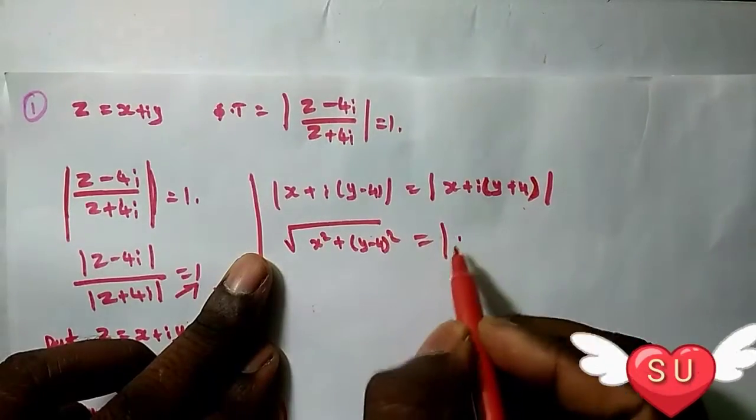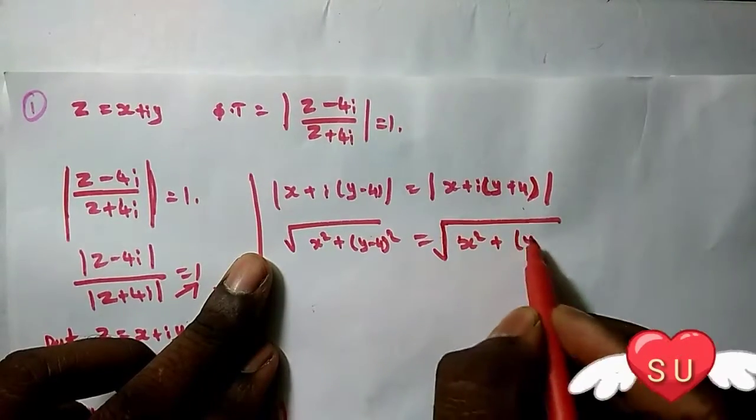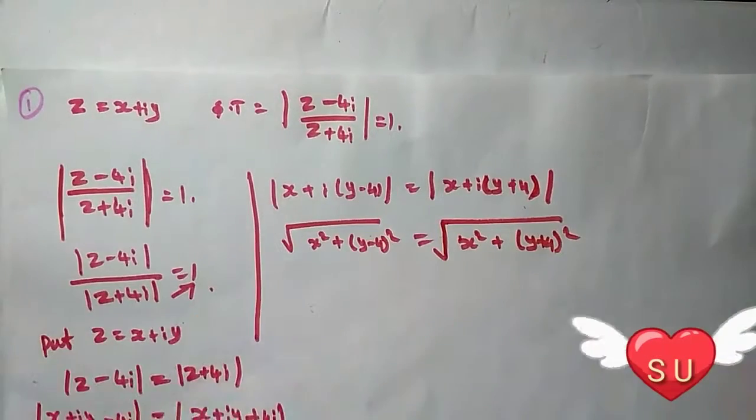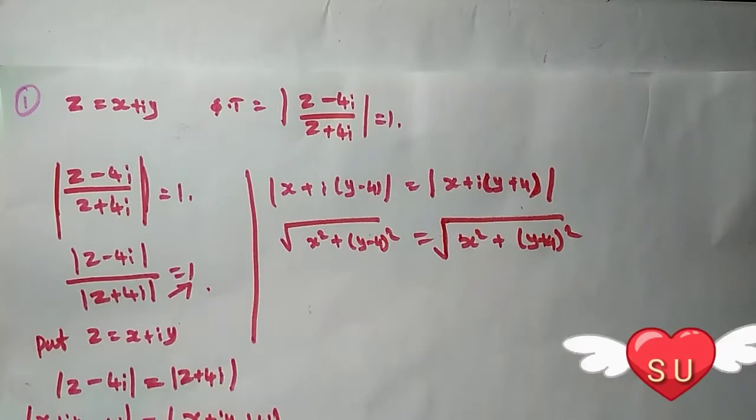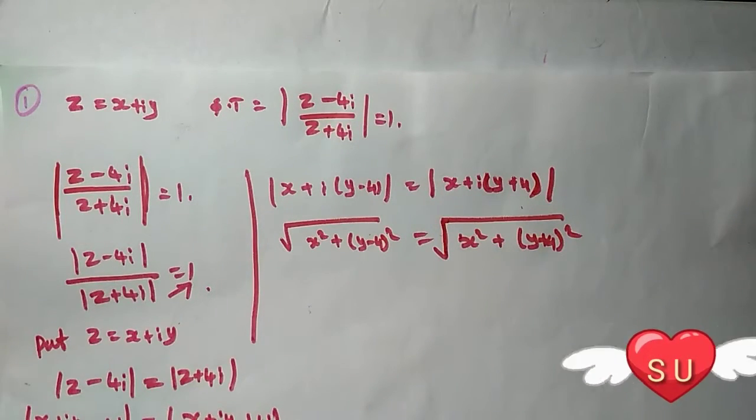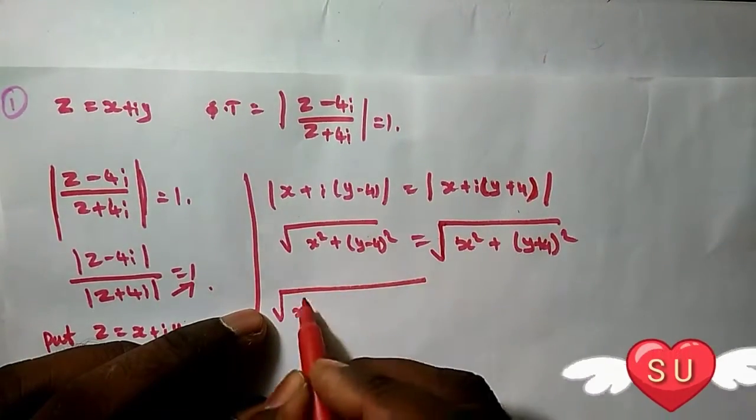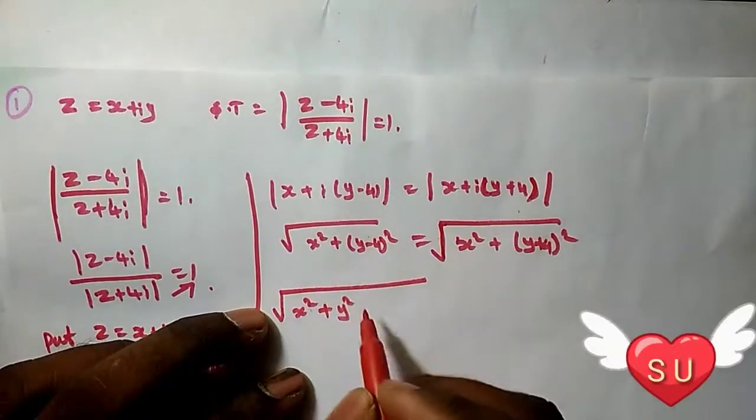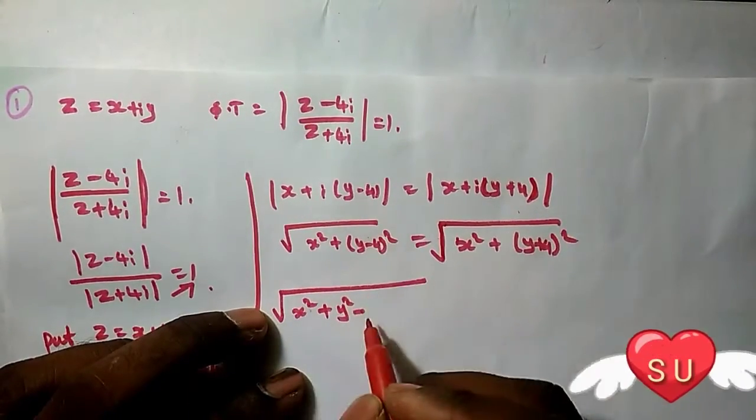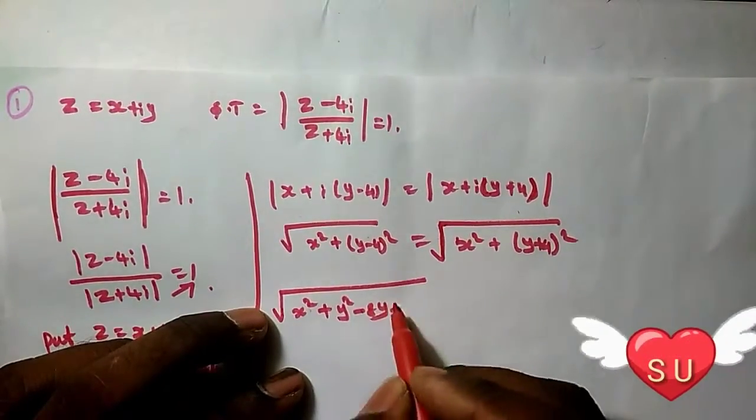This gives us (y - 4) squared equals the square root of x squared plus (y + 4) squared. So we get the square root of x squared plus y squared minus 8y plus 16...